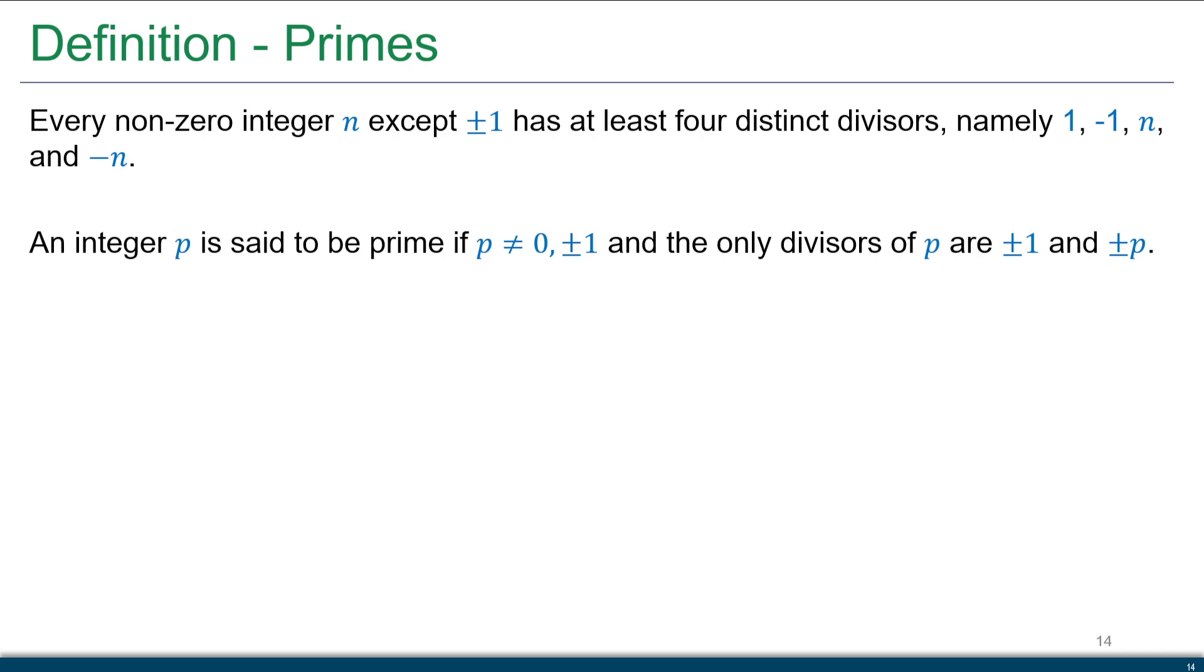All right, for our final topic in lesson number one, we are now dealing with primes. So every non-zero integer n, except plus and minus one, has at least four distinct divisors.